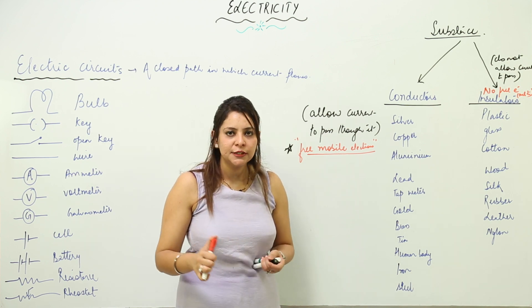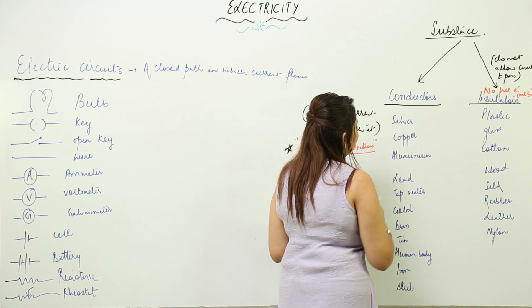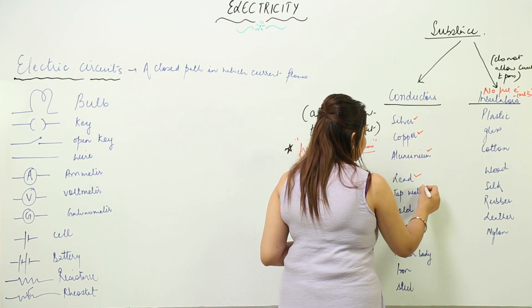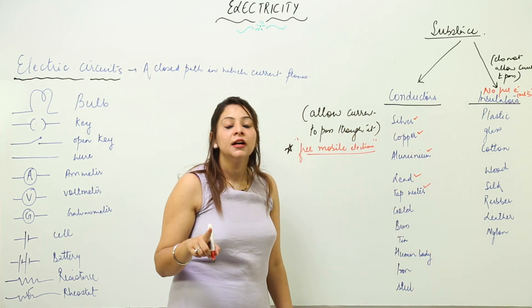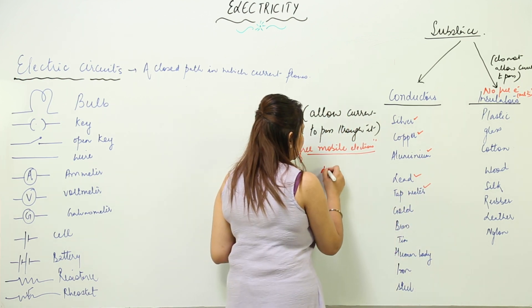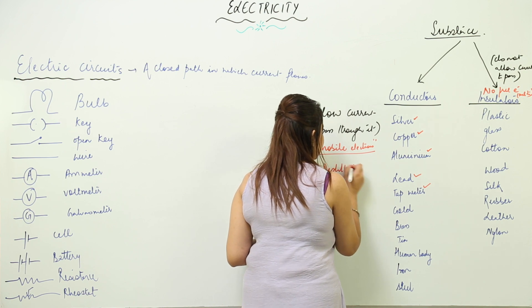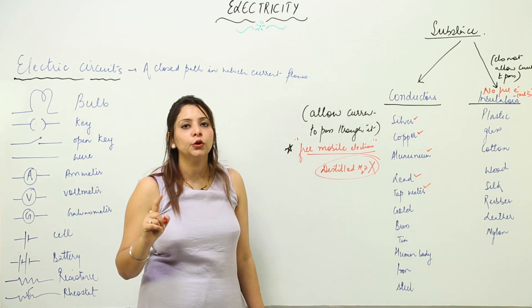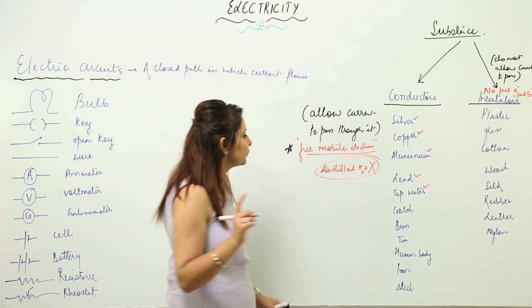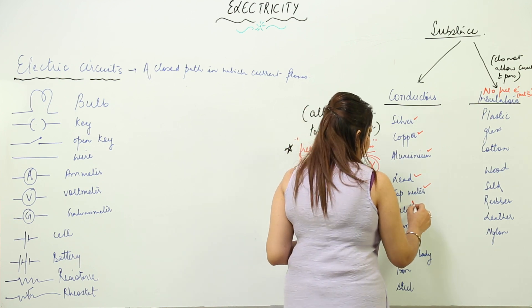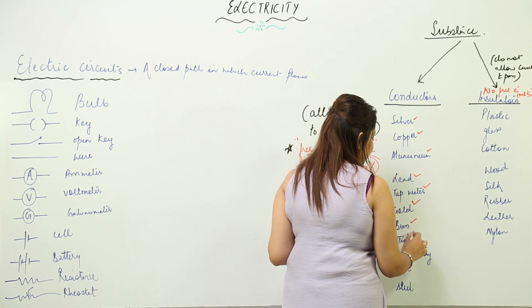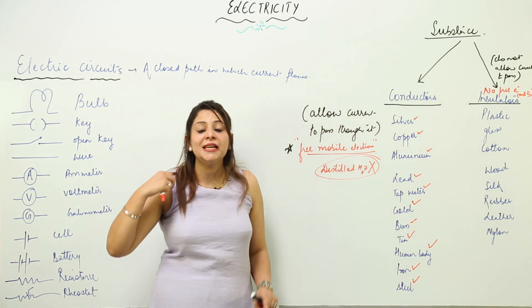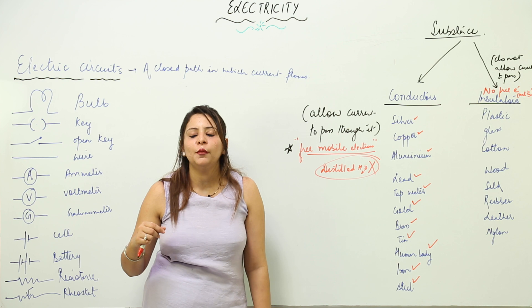Examples of conductors are silver, copper, aluminium, lead, tap water. Note that tap water is a conductor, but distilled water — which is a pure form of water — is a poor conductor. Distilled water is not a good conductor at all, whereas tap water is. Other conductors include gold, brass, tin, human body, iron, and steel.